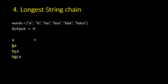Starting with 'a', you add 'b' before it to get 'ba'. From 'ba' you add 'c' between 'b' and 'a' to get 'bca'. From 'bca' you cannot reach 'bda' because that removes 'c' and inserts 'd' — not allowed. But from 'bca' you can reach 'bdca' by inserting 'd', and that is the maximum chain length achievable.